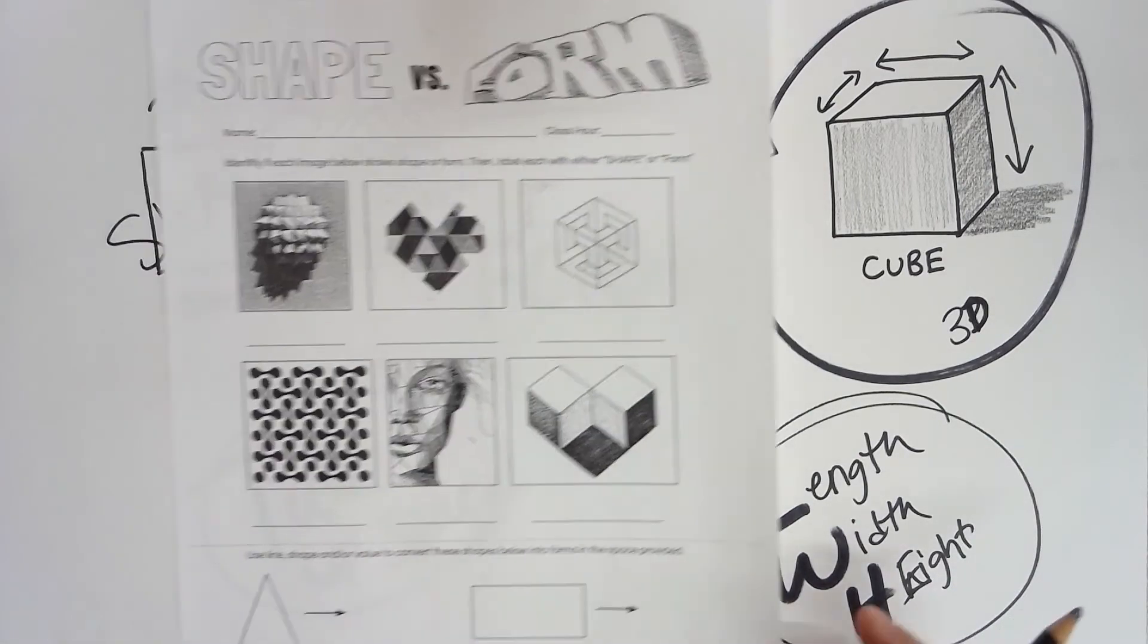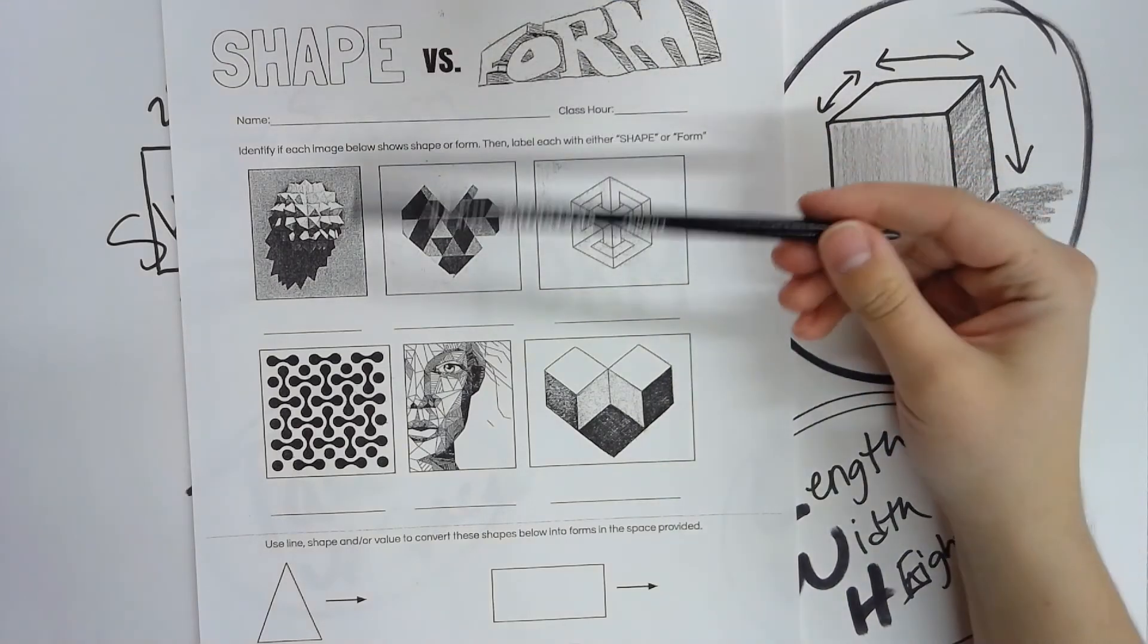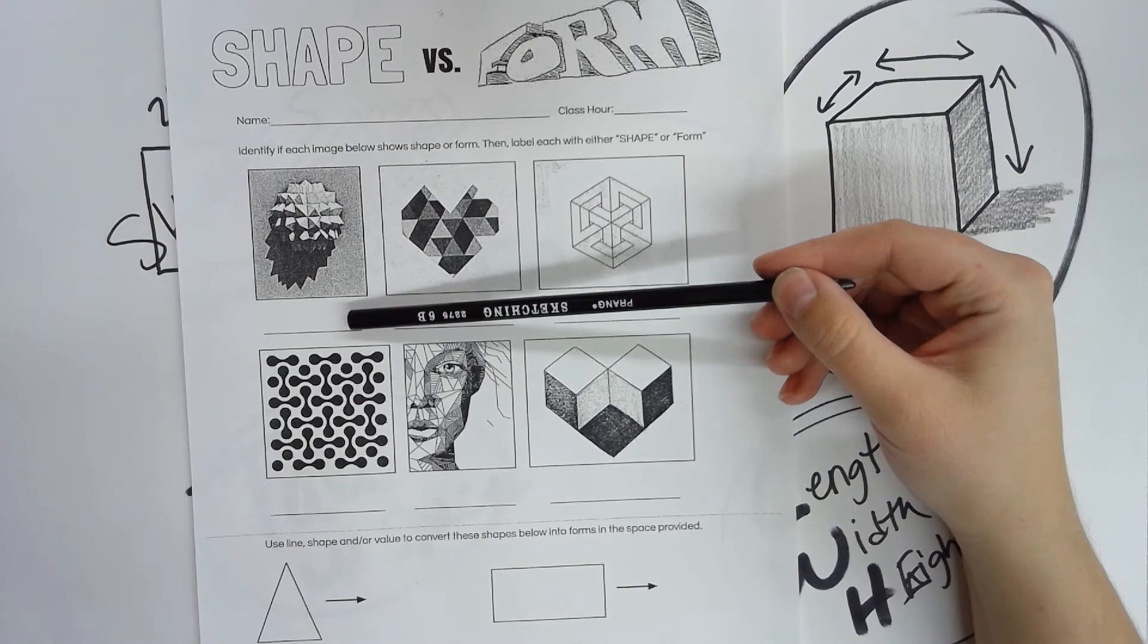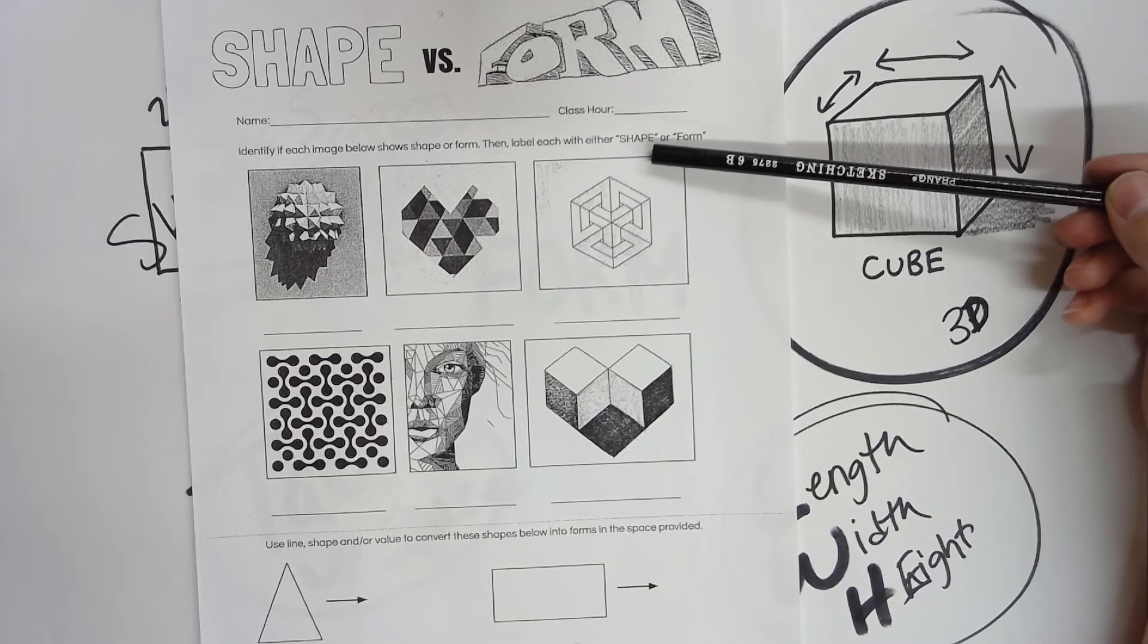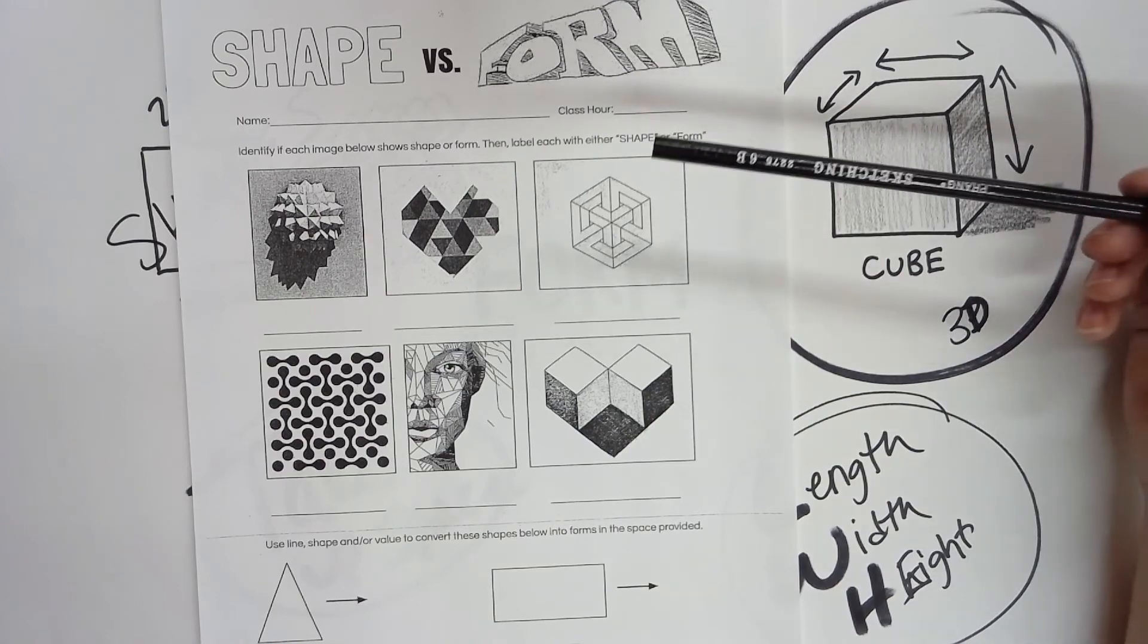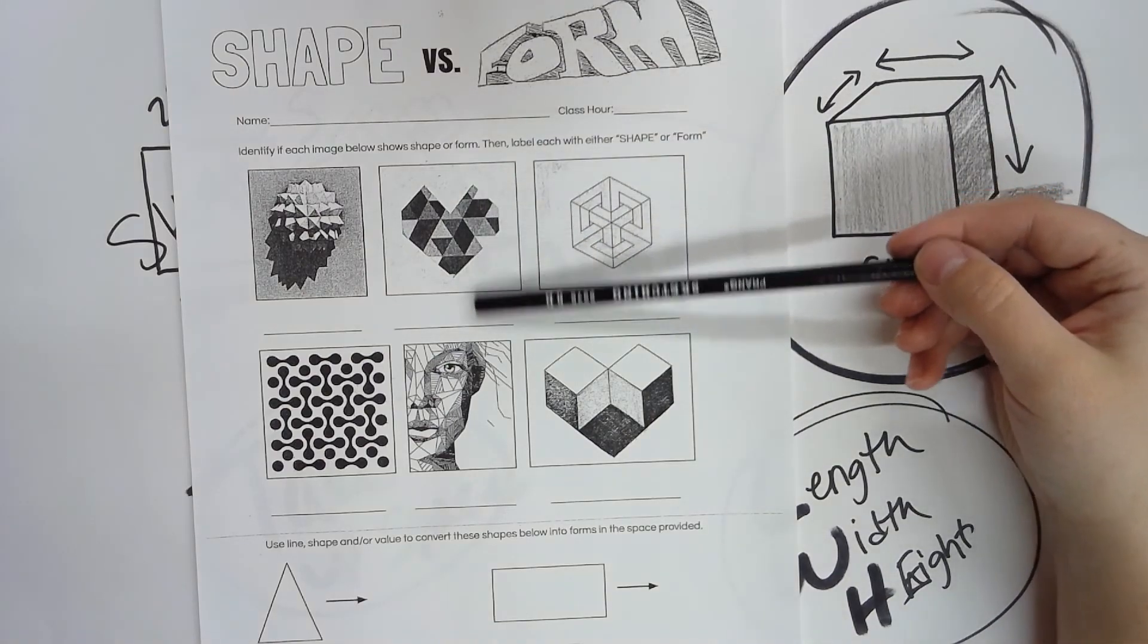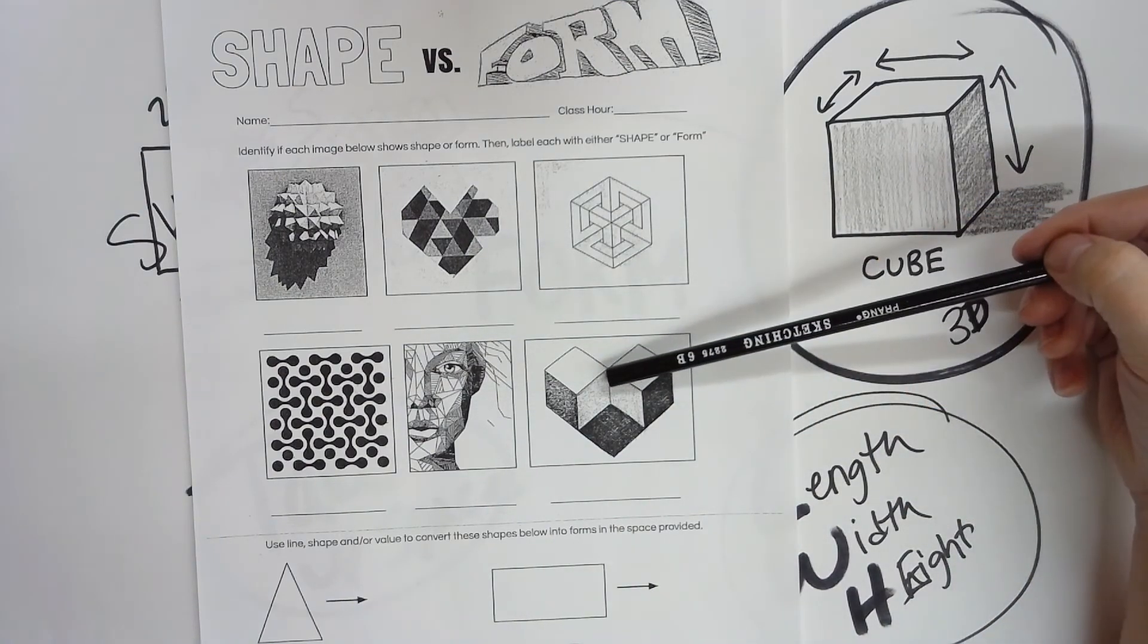So, trying to identify that as well. Number one, you write down here, is it a shape or is it an illustration of form? It's not going to be real form because it's a piece of paper, it is flat. Now, if the object that you're looking at was in real life, would it be three-dimensional? That's what you really want to identify. Same with this one. Is this a shape or a form? All the way through six of them.